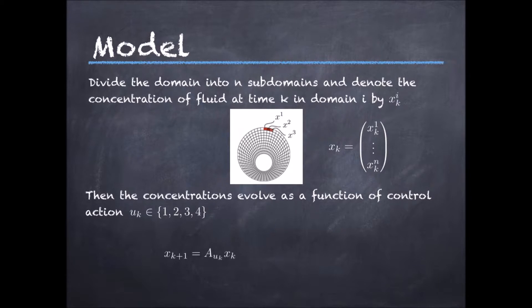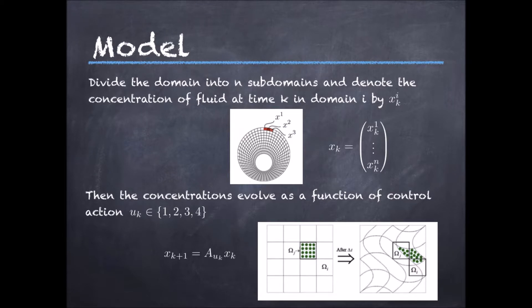To justify this, think that the concentration of the fluid in a given domain at time k will spread to other subdomains between time k and time k plus 1. A simple model is then to add the percentages of the concentration of fluid that spread from a given domain at a given time to the corresponding columns of each matrix A, and of course make these percentages depend on the control input. An important thing to keep in mind is that the dimension of the state n will be huge, in the order of tens of thousands, and therefore we cannot apply dynamic programming.